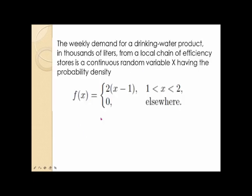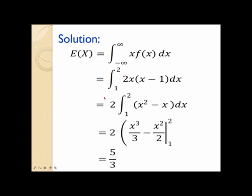Let's have another example — this time for the continuous case. Suppose that the weekly demand for a drinking water product in thousands of liters from a local chain of stores is a continuous random variable X having the probability density function: F of X equals 2 times (X minus 1) if X takes values between 1 and 2, and F of X equals 0 elsewhere. Here, we are to calculate the variance of the random variable X.